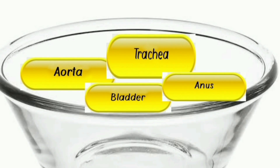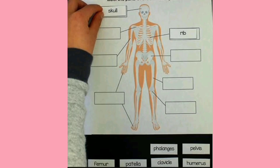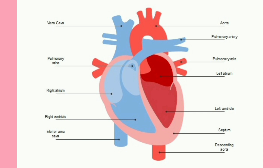For that, you will be given a bowl which contains the names of the different organs of our body, both internally and externally, and it will be in a shuffled manner. As soon as a whistle blows, you should be as fast as you could to identify the names correctly and label the parts.